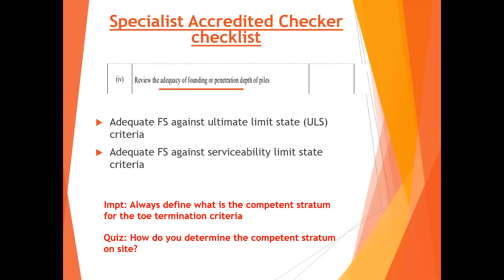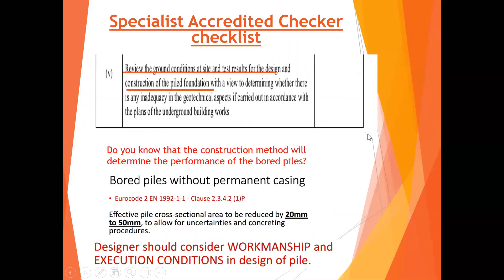It is beyond today's scope to fully explain how to determine the competent stratum - those who have worked with me on large LTA projects will know I share this many times. Moving to the last checklist item: review the ground condition at site and test results for the design and construction of pile foundation. The construction method will determine the performance of a bored pile. In Eurocode, a bored pile without permanent casing has its effective area reduced by 20 to 50 percent. Designers should consider workmanship and execution in their design.